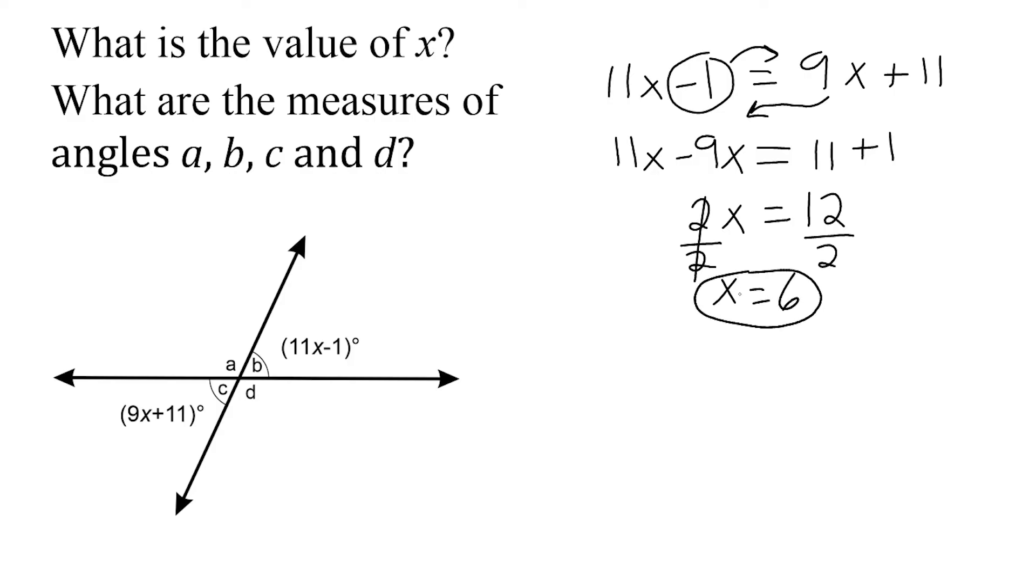All right, now that we know that x is equal to 6, we can plug it in for x for each one of our angles to figure out the angle measure. So let's go to this expression right here. We have 11x minus 1, so we're going to rewrite that as 11 times 6 minus 1.